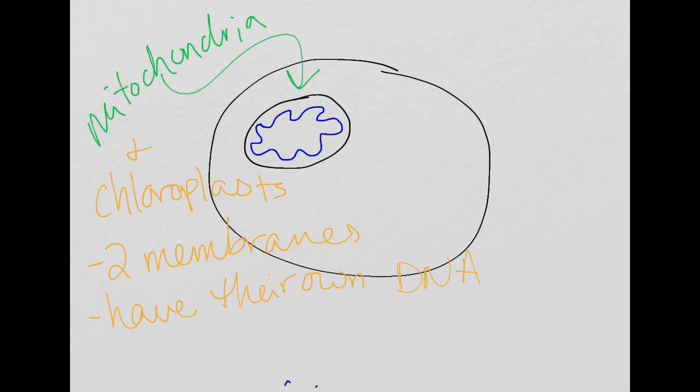the parent cell. Their DNA is circular, similar to that of bacteria. This is the theory we use to explain how mitochondria and chloroplasts came to exist.